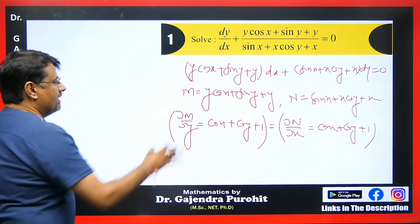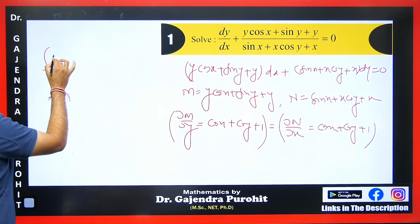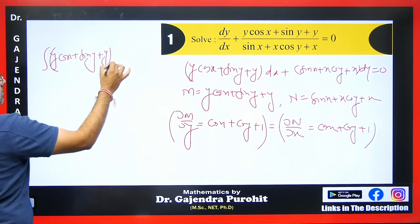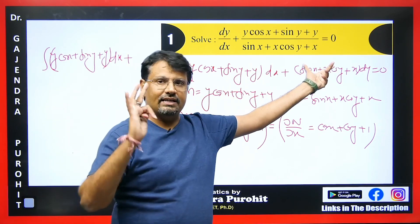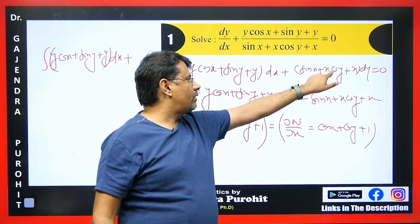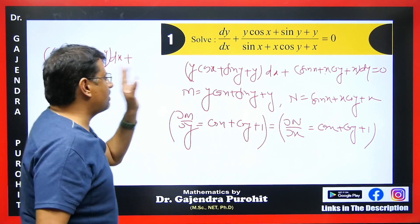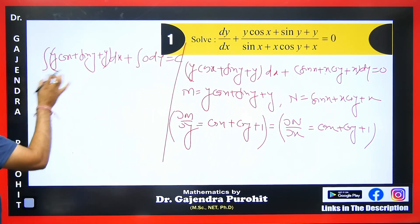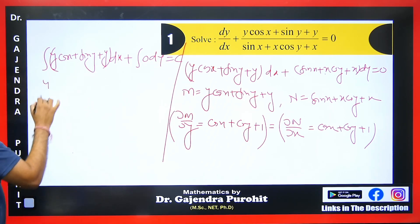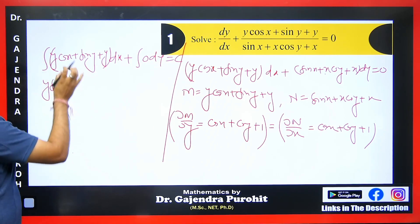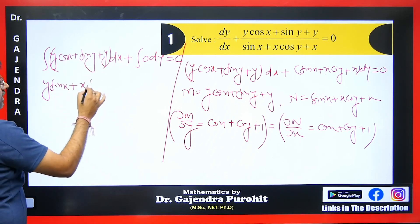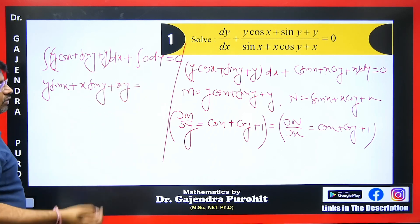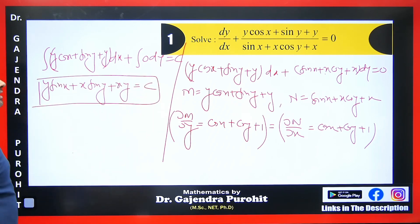Since the equation is exact, we integrate directly. Integration of y cos x gives y sin x, sin y integrates to x sin y, and y gives xy. For the second term, all terms in N contain x so there is no term without x — this becomes 0. The answer is y sin x + x sin y + xy = c.